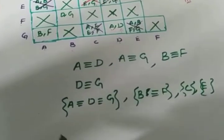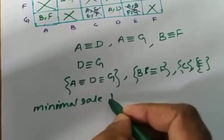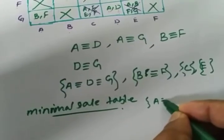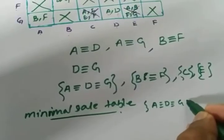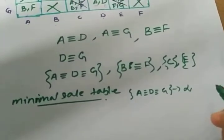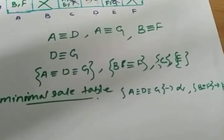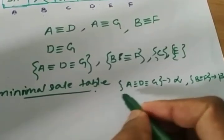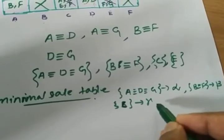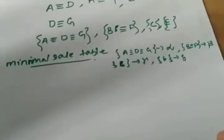Now we write the minimum state table. Assign new symbols: the set A = D = G is assigned alpha; the set B = F is assigned beta; C is assigned gamma; and E is assigned delta.